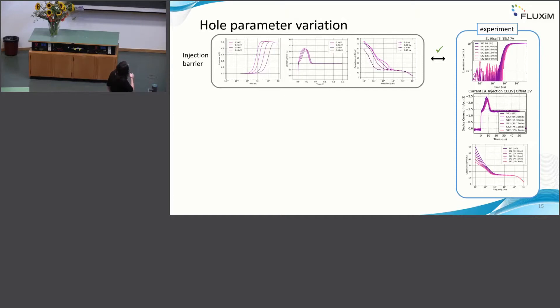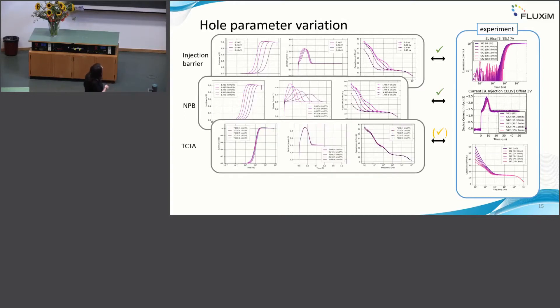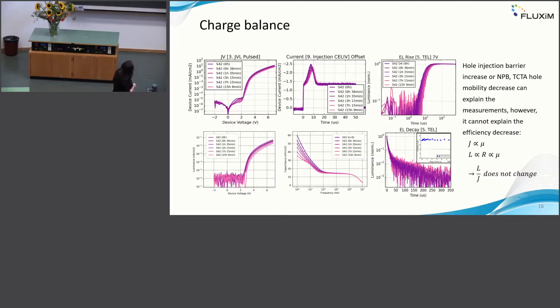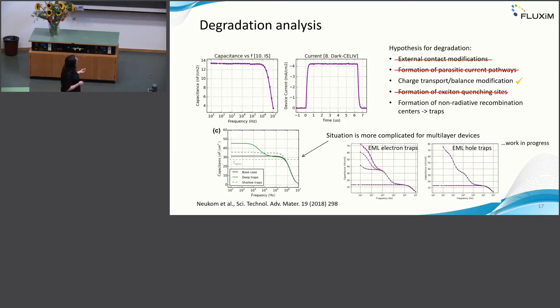Then we just vary these parameters. So I will speed up due to the lack of time. We have injection barriers and NPB mobility variation that would lead to the same effect as we see experimentally. TCTA, hole mobility and EML, we can more or less exclude. However, we cannot with this explain the change in device efficiency. The last point to mention is that we could also have some formation of non-radiative recombination centers. It's still a work in progress. We do not see a change in this CF plot, but it could also be due to the fact that we have a lot of different layers. So this is still work in progress.